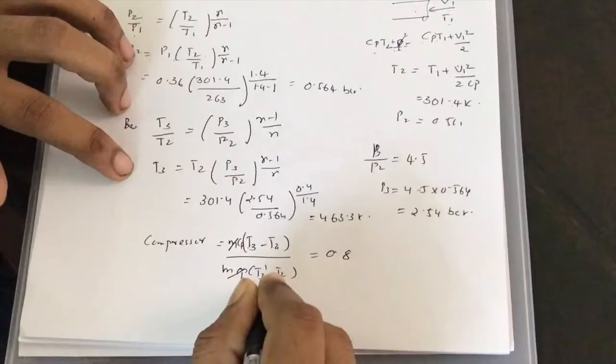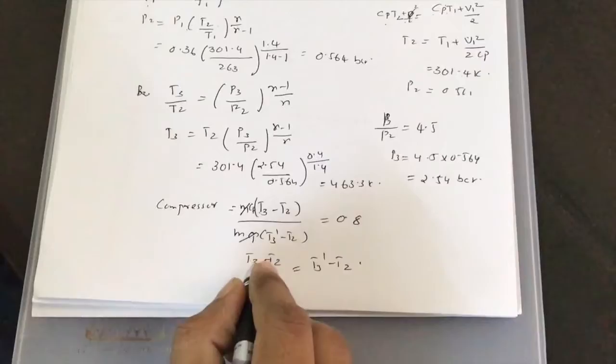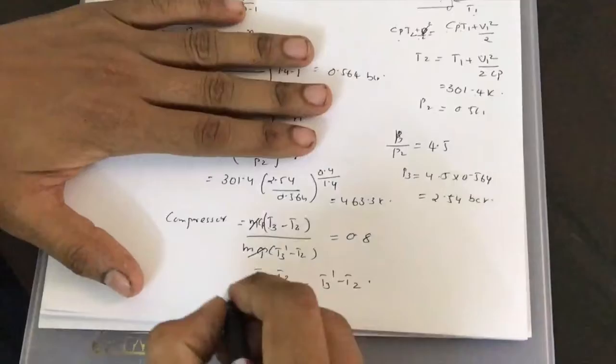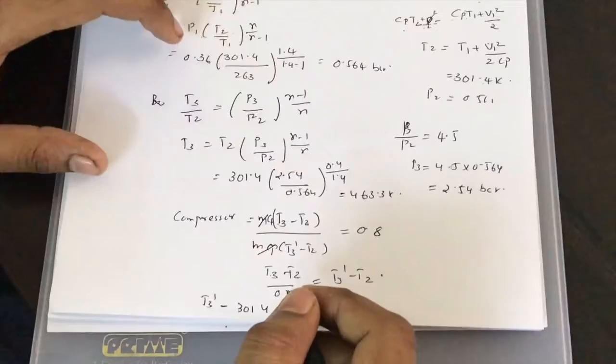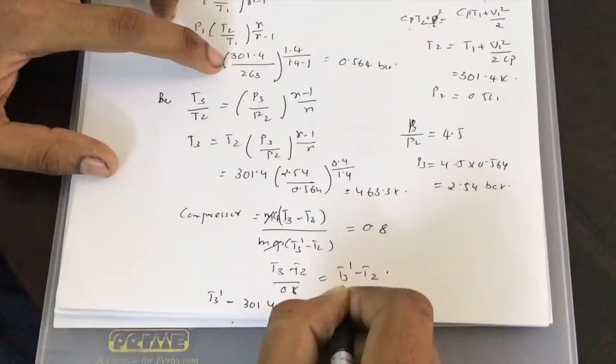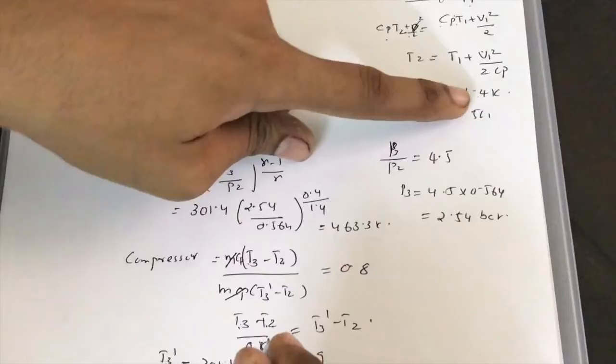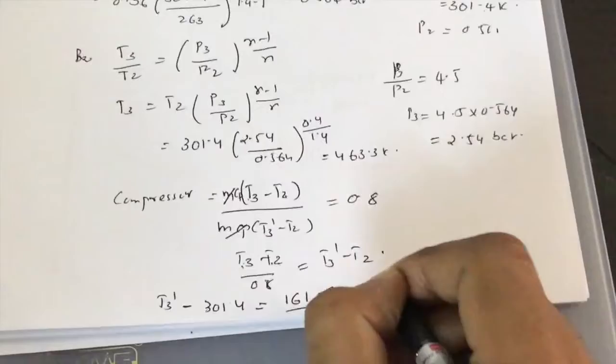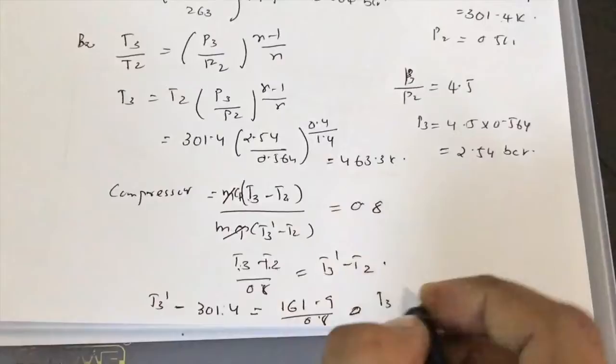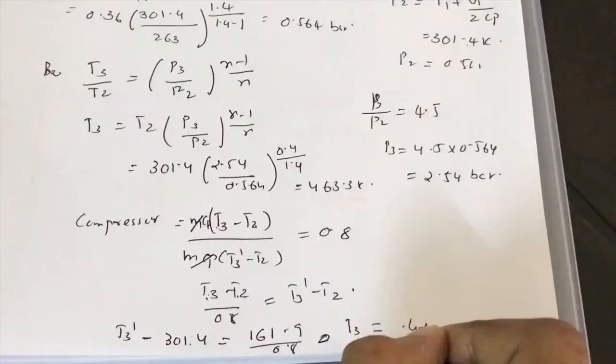Rearranging: T3' - T2 = (T3 - T2) / 0.8. Substituting T3 = 463.3 K and T2 = 301.4 K: T3 - T2 = 161.9 K. Therefore T3' - 301.4 = 161.9 / 0.8.